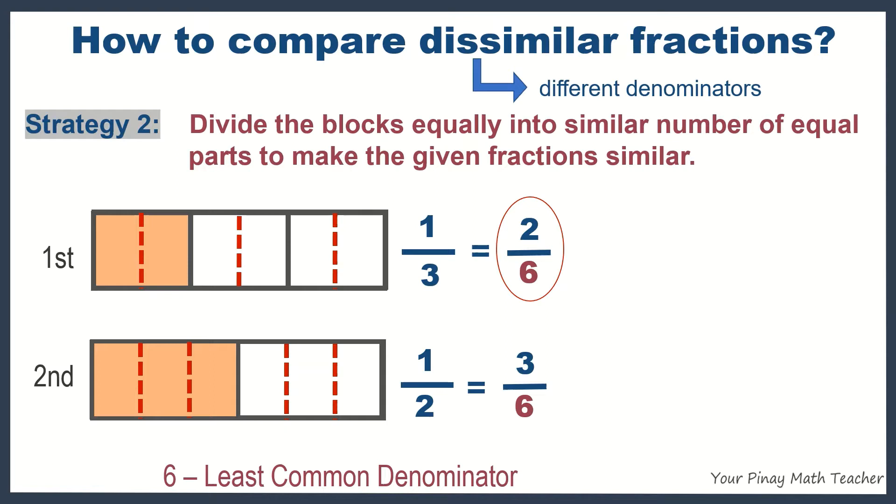Since two-sixths is less than three-sixths, then one-third is less than one-half.